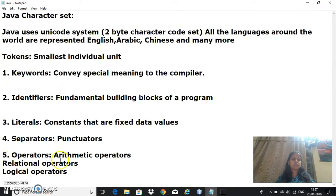Under tokens we have five sections: keywords, identifiers, literals, separators and operators.